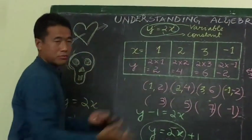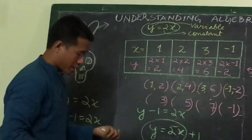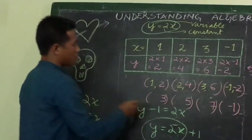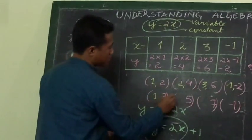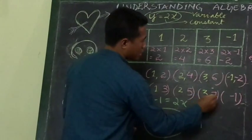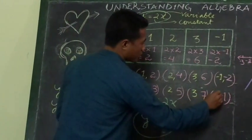When x changes to 1, 2, 3, and minus 1, we get the new set of points for y equals 2x plus 1.